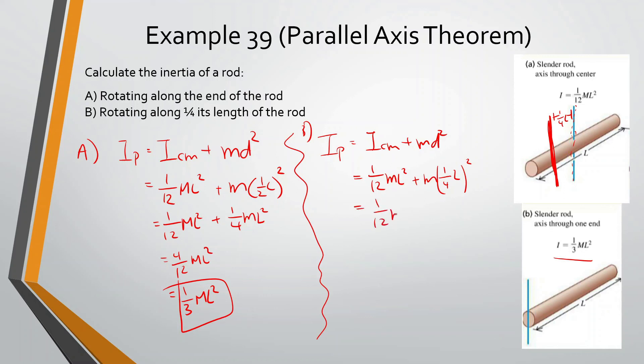So this is going to be equal to one fourth l squared. So now let's simplify one twelfth ml squared plus one sixteenth ml squared. And let's see what this gives us. It's going to be 48. So it's going to be four over 48 ml squared plus three over 48 ml squared. So it's equal to seven over 48 ml squared. I believe I did that right.